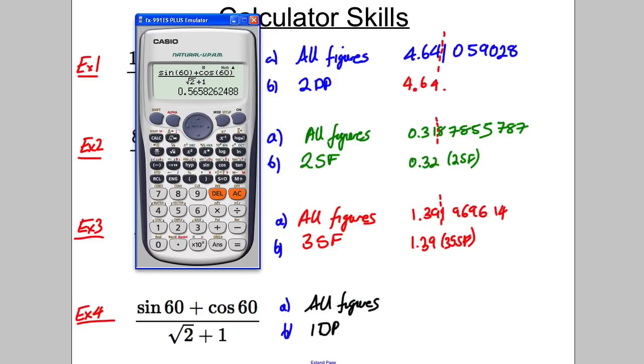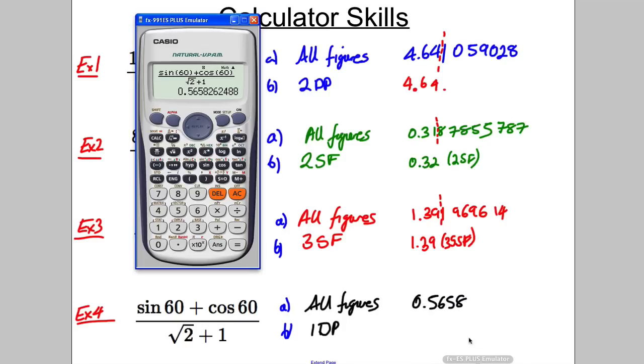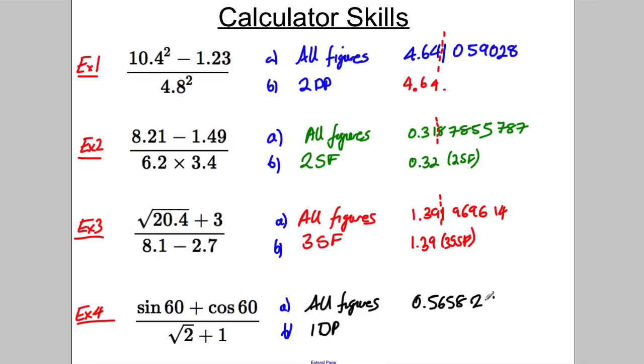Press equals, and you get 0.565826488. And then you round it to 1 decimal place. So you put a line after the first decimal place. That 6 makes that round up to a 6. So it's 0.6 to 1 decimal place.